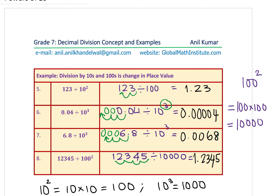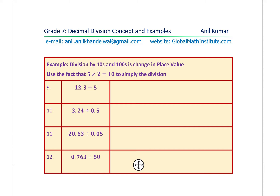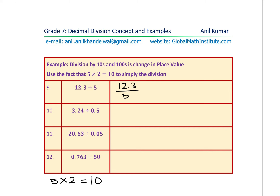Now let's understand dividing by 5. Since 5 times 2 equals 10, and dividing by 10 is very simple, we can convert fives to tens. For 12.3 divided by 5, rewrite it as a fraction and multiply both numerator and denominator by 2. We get 24.6 divided by 10, then shift the decimal one place left to get 2.46.